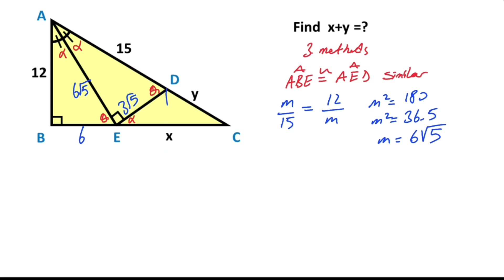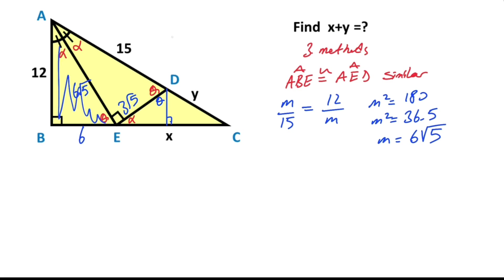Next step, if you draw a perpendicular line like this and focus on this triangle: if this angle is alpha, that means here must be equal theta. That means this triangle and this triangle are similar. If you focus on triangle ABE, the ratio of the lengths of this triangle is 2.